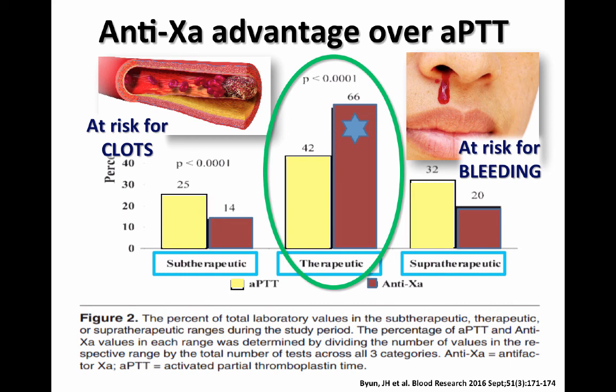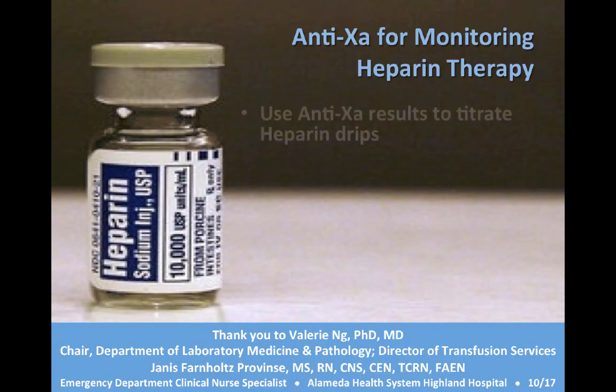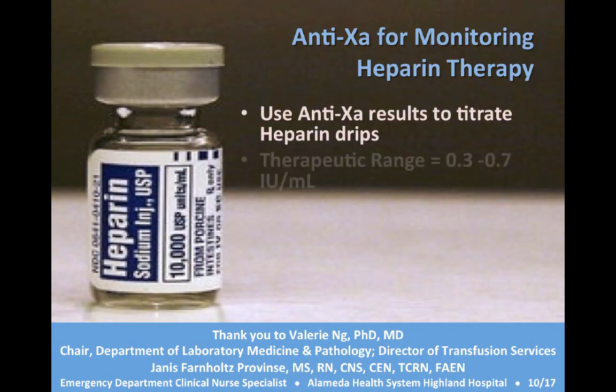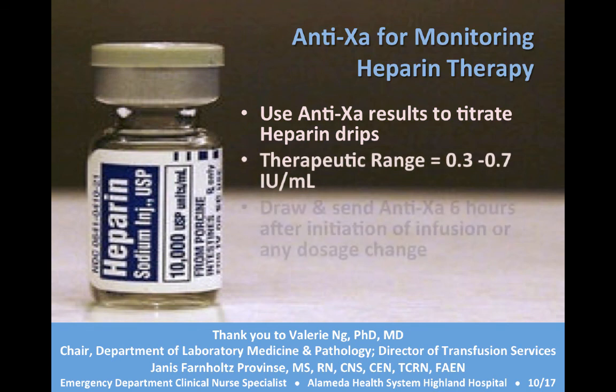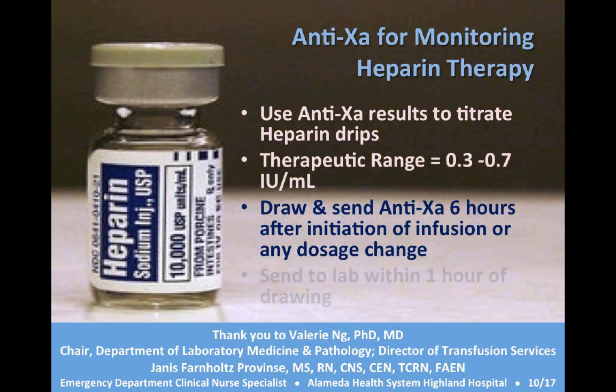Bottom line: anti-Xa is more accurate at showing us when the patient is in the therapeutic range. In summary, use anti-Xa results to titrate your heparin drips. Remember the range is between 0.3 and 0.7. Draw and send the anti-Xa six hours after initiation of a heparin infusion or after any dosage change, and make sure to send it to the lab within one hour of drawing so that the heparin doesn't degrade the sample. Thanks for listening.